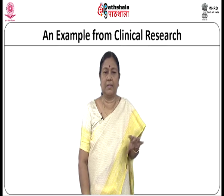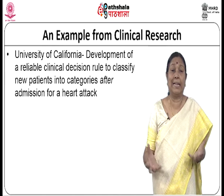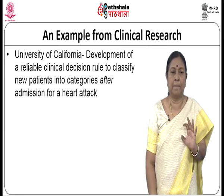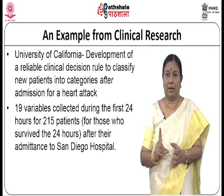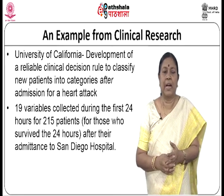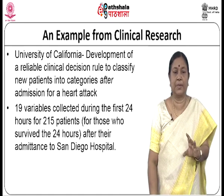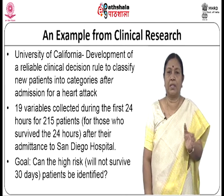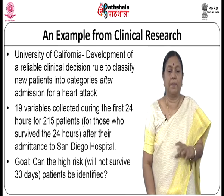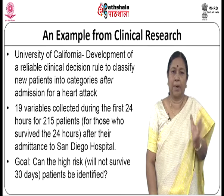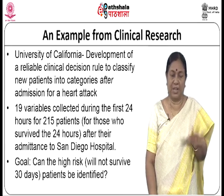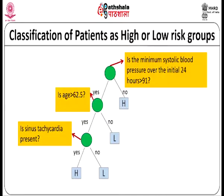Here is an example from clinical research done by the University of California: development of a reliable clinical decision rule to classify new patients into categories after admission for a heart attack. 19 variables were collected during the first 24 hours of admission for 215 patients who survived the first 24 hours after admittance into San Diego hospital. The goal was to identify high-risk patients — those who would not survive 30 days — so they could be given special treatment. The classification was binary: high risk and low risk groups.